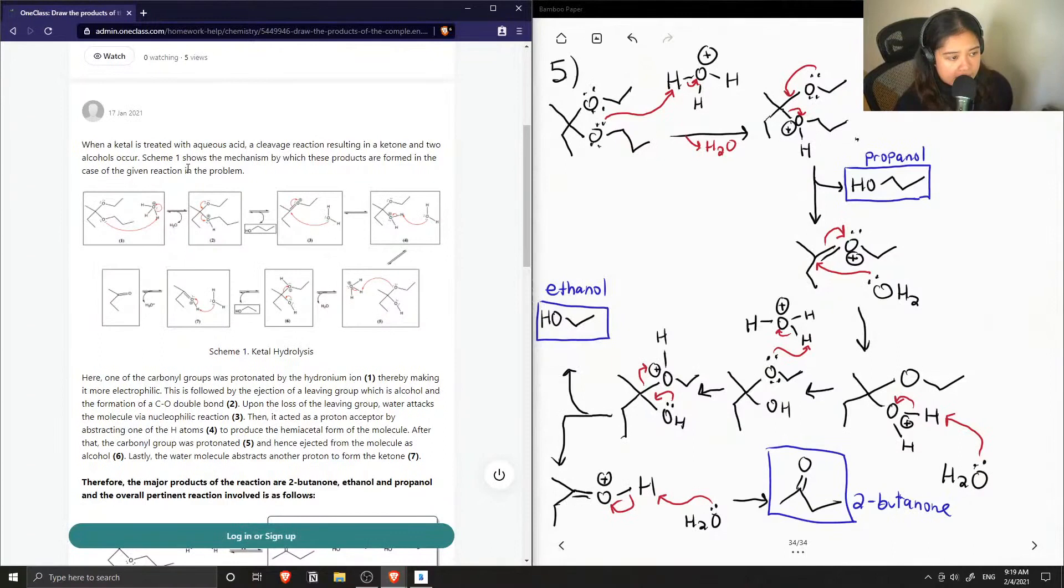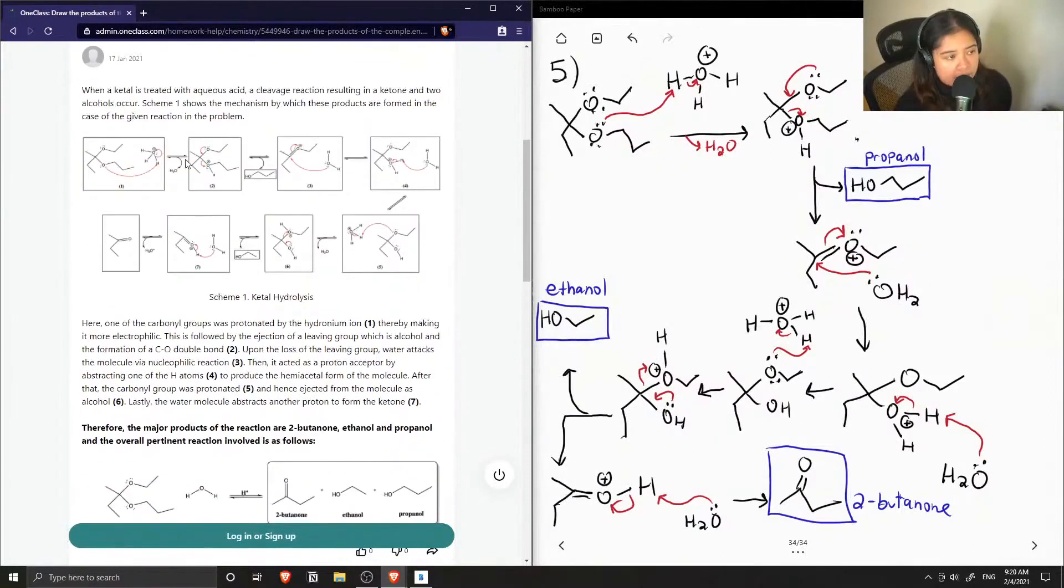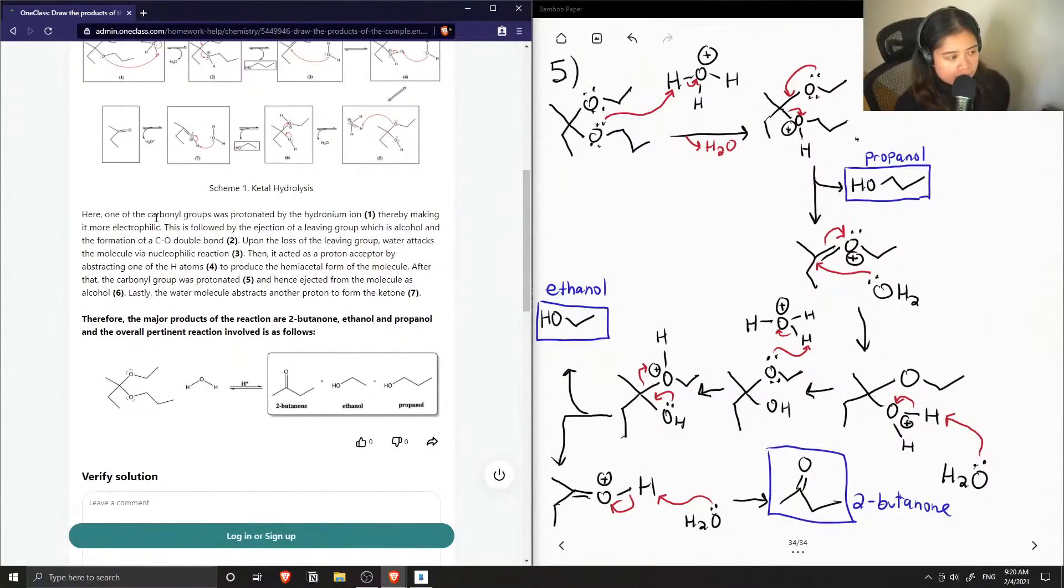Scheme 1 shows the mechanism by which these products are formed in the case of the given reaction in the problem. Okay so we have the protonation of one of the oxygens. Okay this comes down to form propanol. Water will come in, get deprotonated, and then the same thing happens again and we get ethanol and 2-butanone. So one of the carbonyl groups was protonated by the hydronium ion making it more electrophilic. This is followed by the ejection of a leaving group which is alcohol and the formation of a double bond.